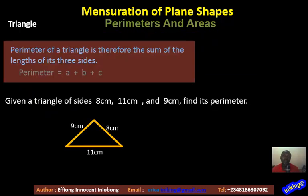Let's take a typical example. We are given a triangle of sides 8 centimeters, 11 centimeters, and 9 centimeters. Find its perimeter. This simply means the side 8 centimeters, plus 11 centimeters, plus 9 centimeters. And the total boundary length or the perimeter will therefore be 28 centimeters in this case.